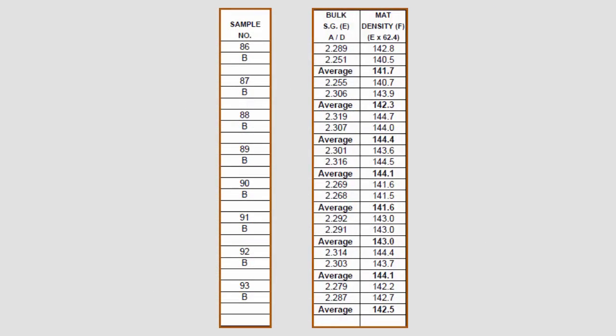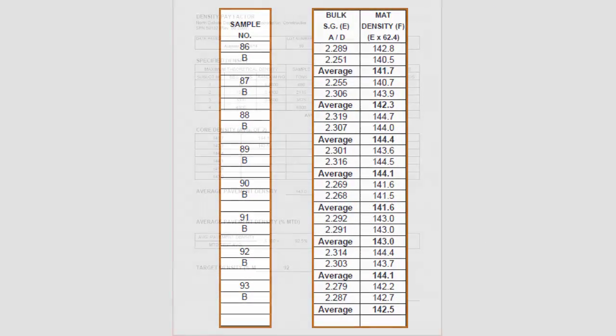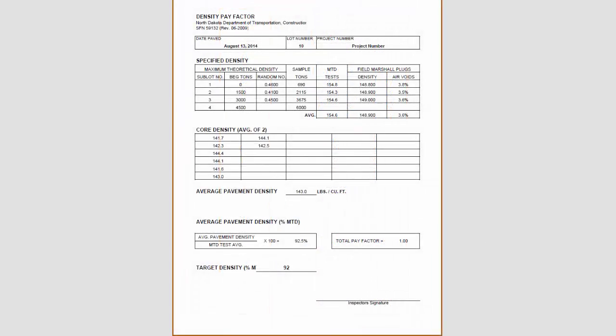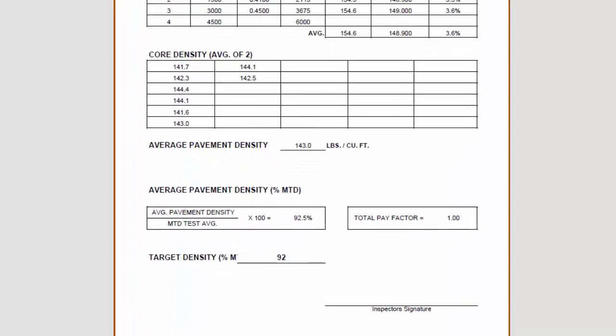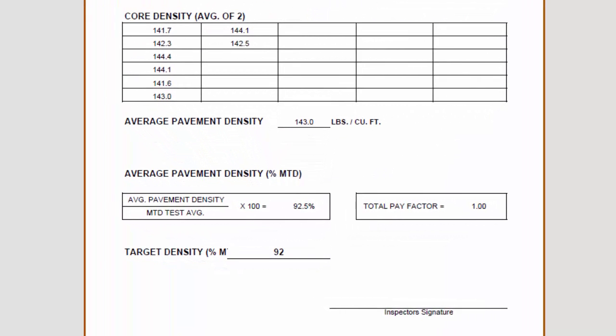Then the average is calculated. The calculated average is then transferred to state form number 59132, Density Pay Factor, for the final calculations.